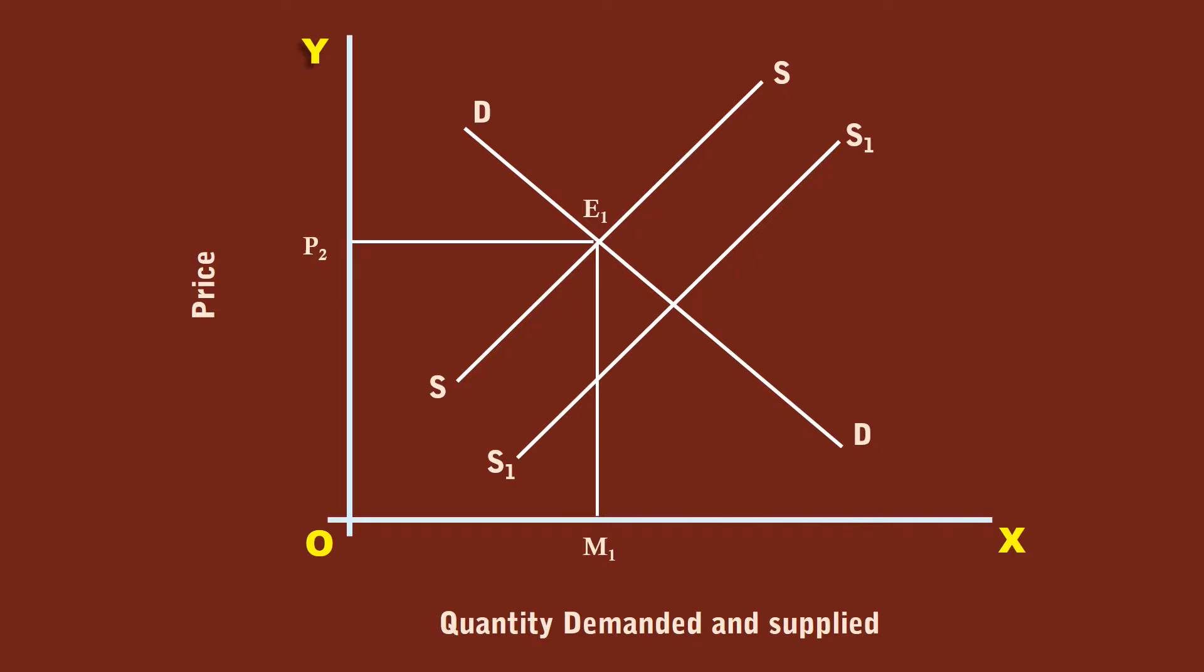At P2 price, the suppliers are willing to supply E2 quantity, but buyers are willing to buy E1 quantity. There emerges an oversupply to the tune of E1, E2. The sellers, in their attempt to clear the excess supply, reduce the price and move down along the supply curve S1, S1. Since the demand is elastic, the buyers also move down along the demand curve DD. New equilibrium is formed at point E3. The new equilibrium price is P1 which is less than the original price. The new equilibrium quantity is M2 which is greater than M1. The net result is a fall in price and increase in quantity demanded and supplied.